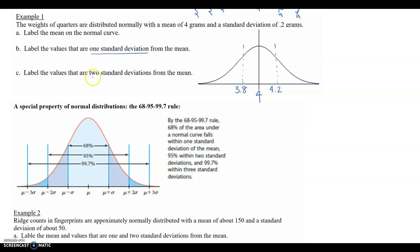Part c: two standard deviations from the mean. So four plus 0.2 plus 0.2, or just from 4.2 you can add. So that's going to be 4.4, and then subtract to get 3.6.